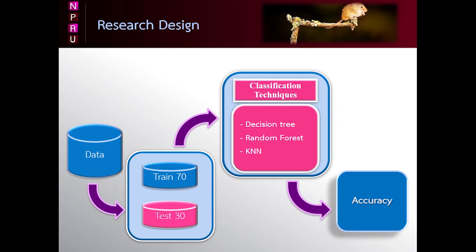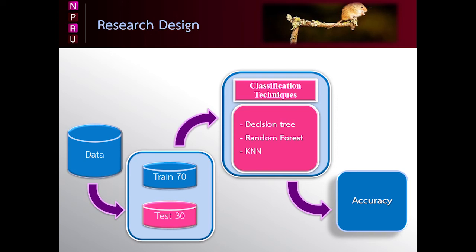In our research design, there are 5 steps. Step 1: Select data. We have selected mice protein expression data from www.kaggle.com. Step 2: Prepare data. We have normalized data by using min-max normalization method.